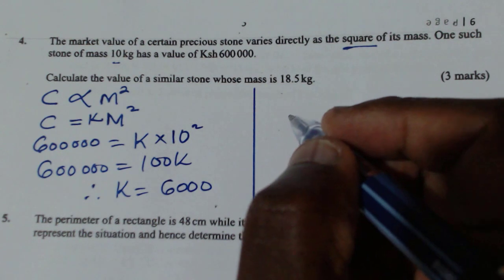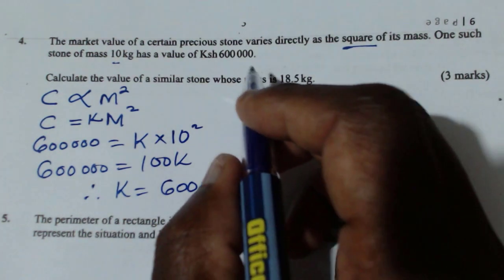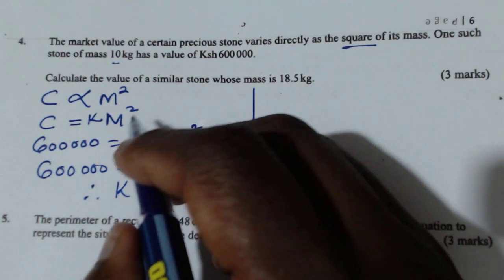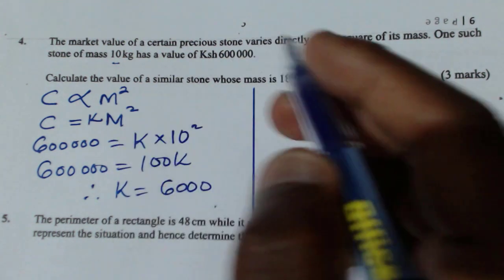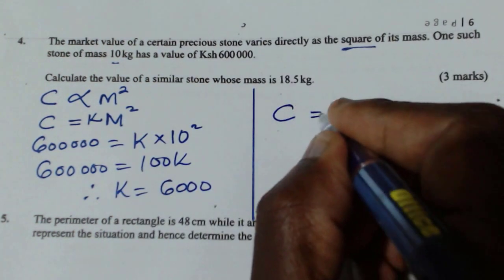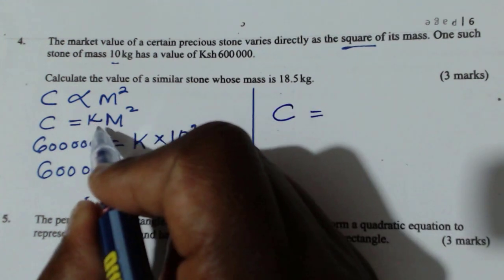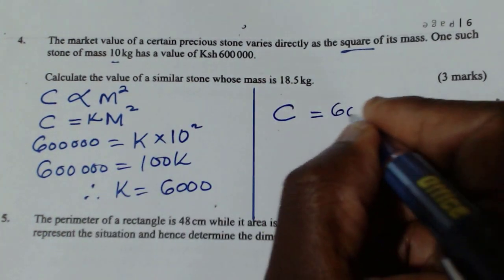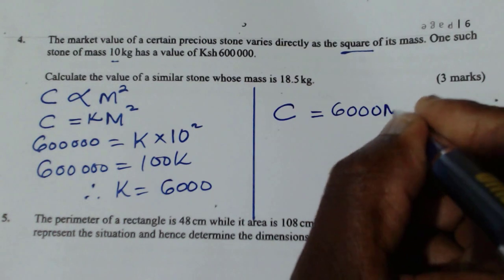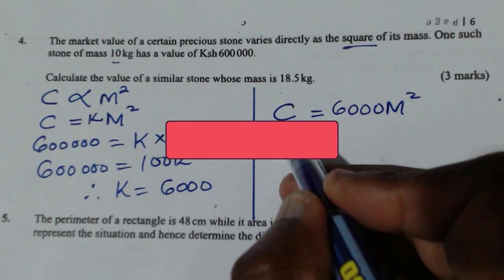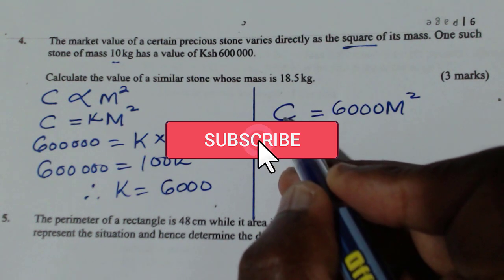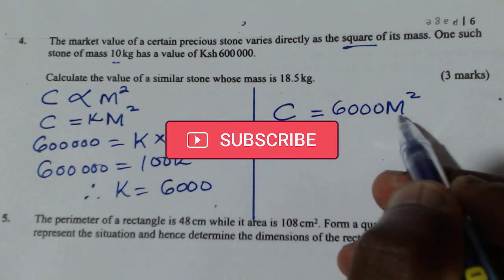Once you get that, we can now write the connection between the cost of this stone and the mass, which is C equals 6,000m squared. So this is the equation connecting the cost of this stone and the mass.